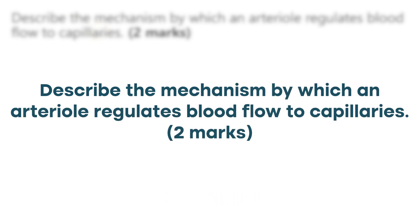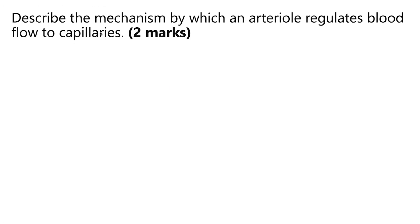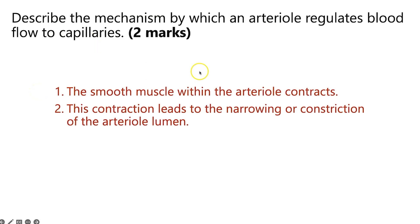Here's our first question — a describe one. Describe the mechanisms by which an arteriole regulates blood flow to the capillaries. When going from an arteriole to the capillaries you're going from a wider blood vessel to a narrower one, and the arteriole has elastic and muscular layers in its walls whereas capillaries don't. The key idea is that smooth muscle within the arteriole wall contracts — that's your first mark. That contraction leads to the narrowing or constriction of the lumen, which helps slow down the blood and increases pressure in the capillaries.